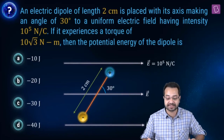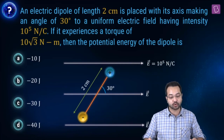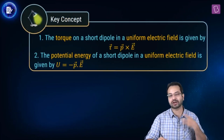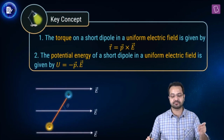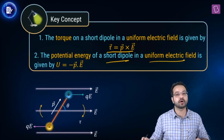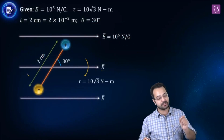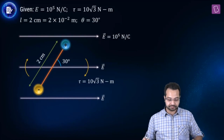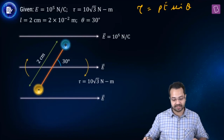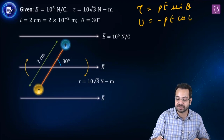An electric dipole of length 2 cm is placed with its axis making an angle of 30° to a uniform electric field of intensity 10⁵ N/C. If it experiences a torque of 10√3 N·m, then the potential energy of the dipole is to be found. The key concepts: torque on a short dipole in a uniform electric field is τ = P × E, and potential energy is U = −P·E. These results are only for short dipoles.